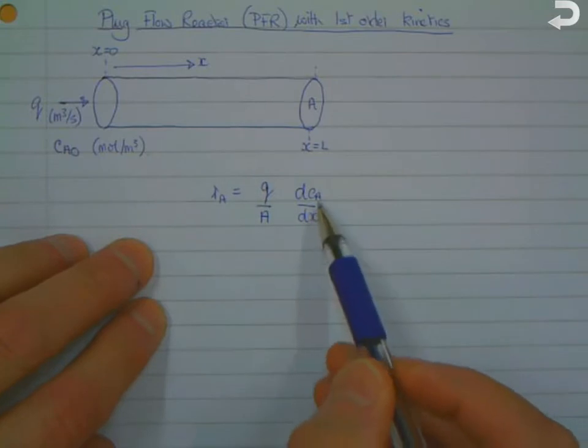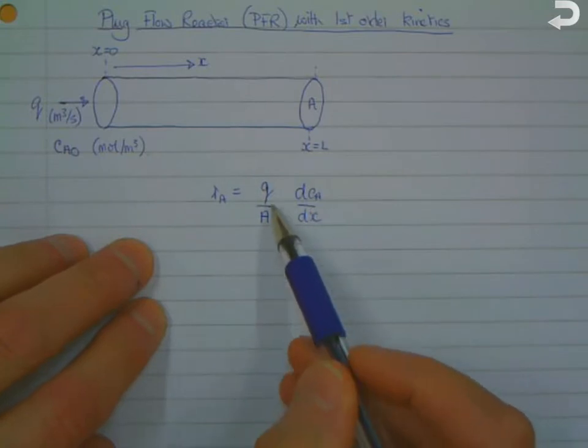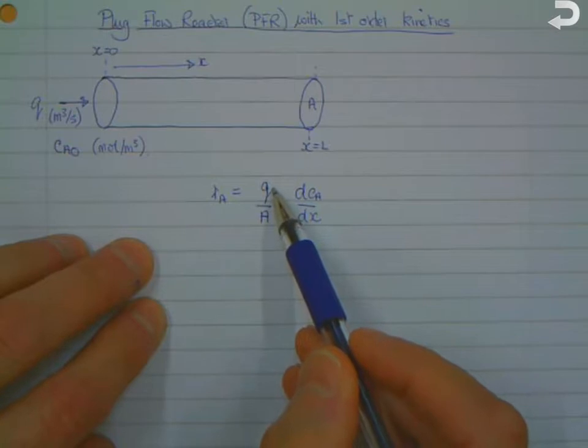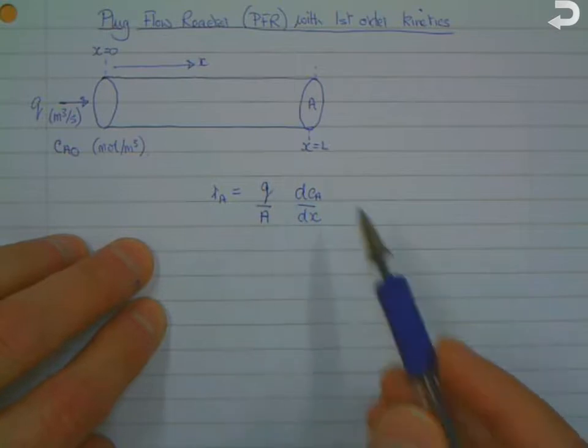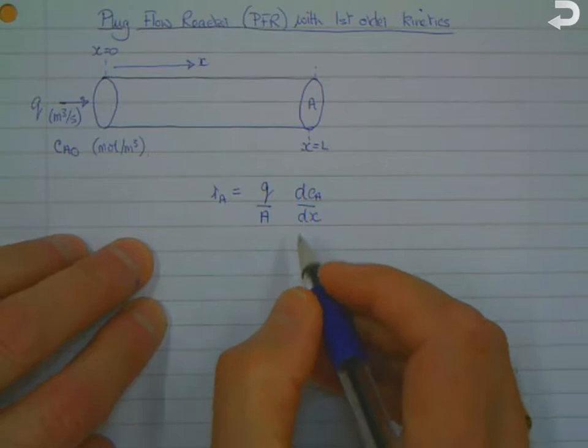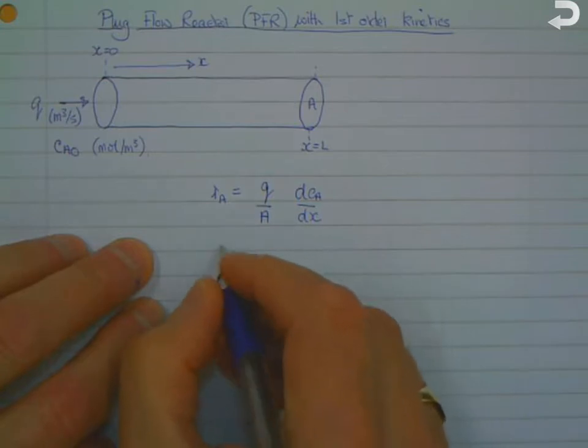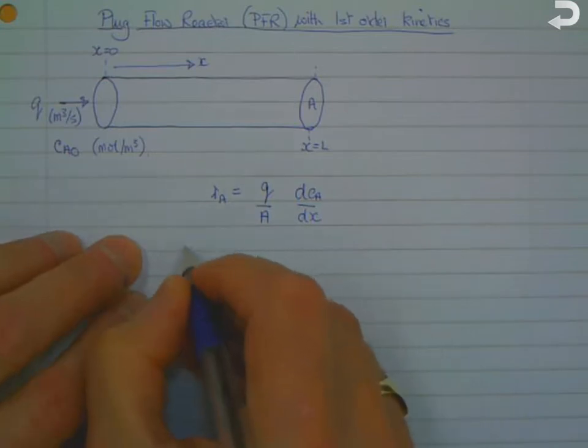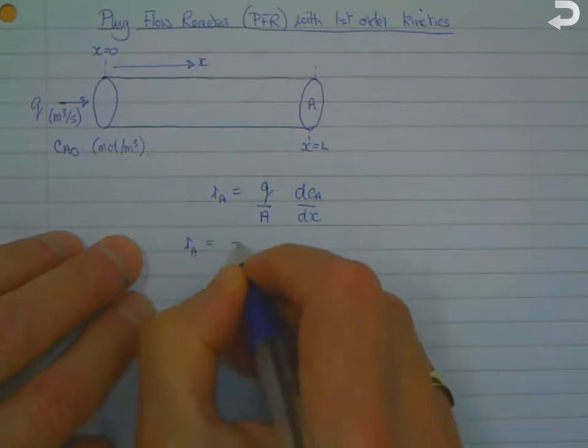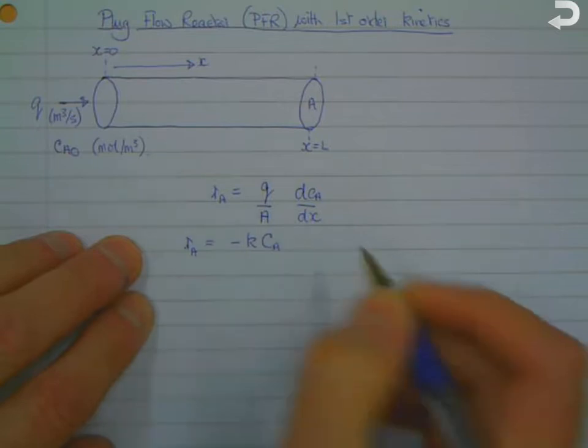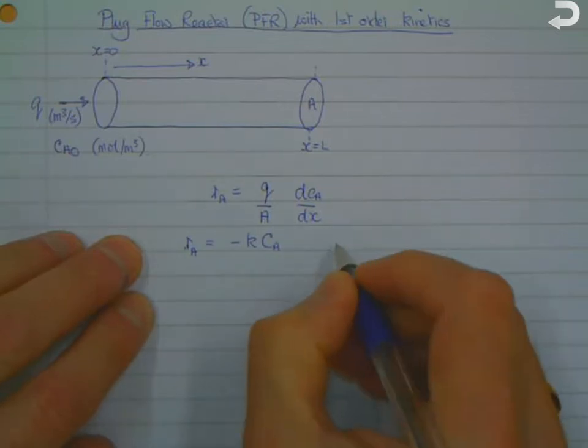Expressed as a function of the inlet flow rate and cross-sectional area. And if we now have first-order reaction kinetics, we can write that RA is equal to minus K times CA, where K is the first-order kinetic rate constant.